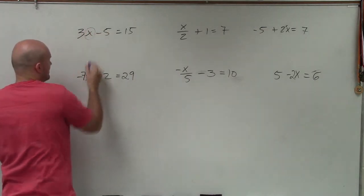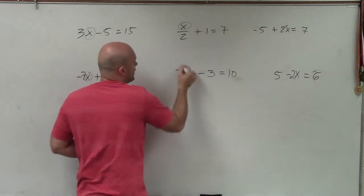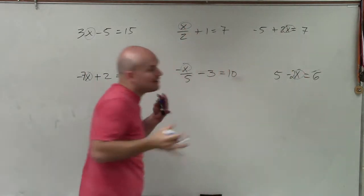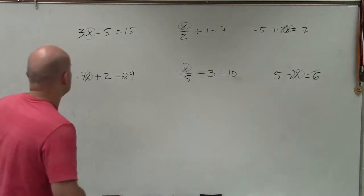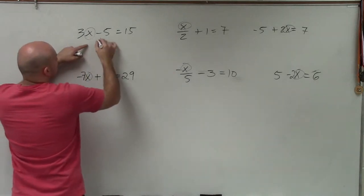So we look at each variable and we say, alright, for each variable, what is being added or subtracted? That's what I want to undo first. So you can see here, negative 5 is being subtracted, so I'm going to add.